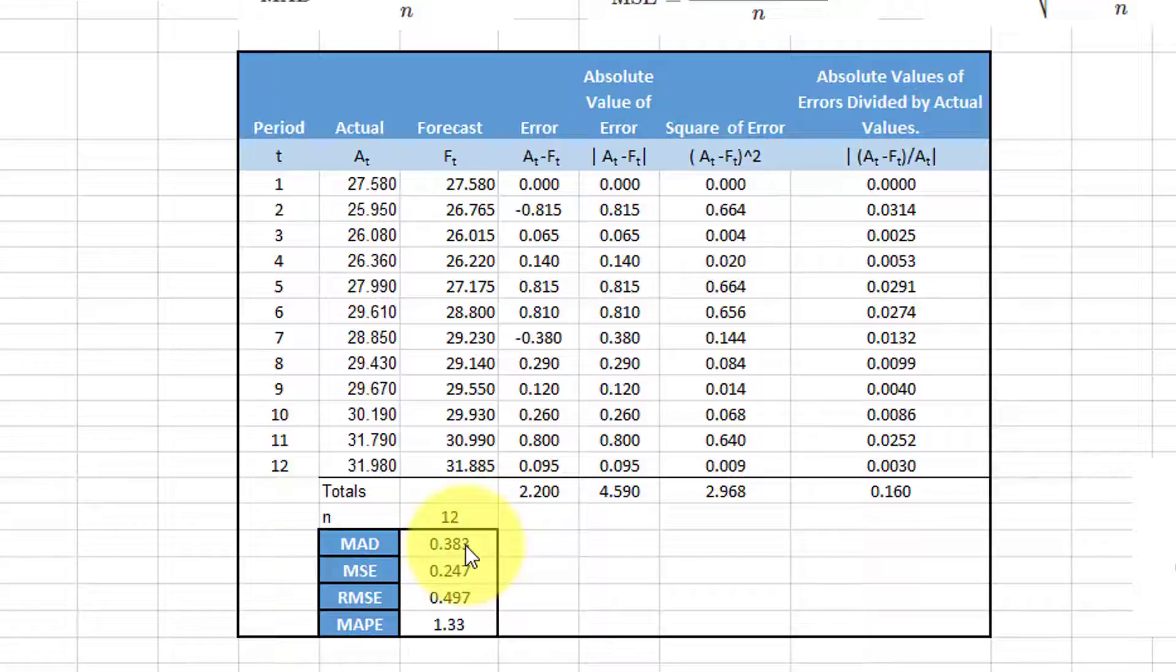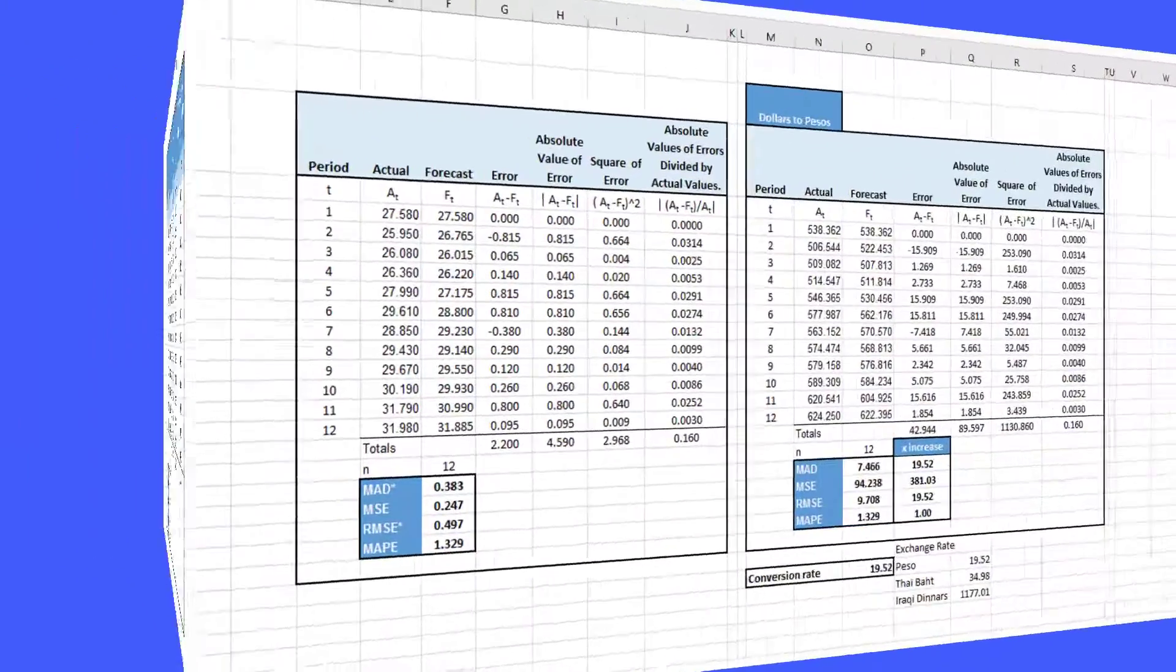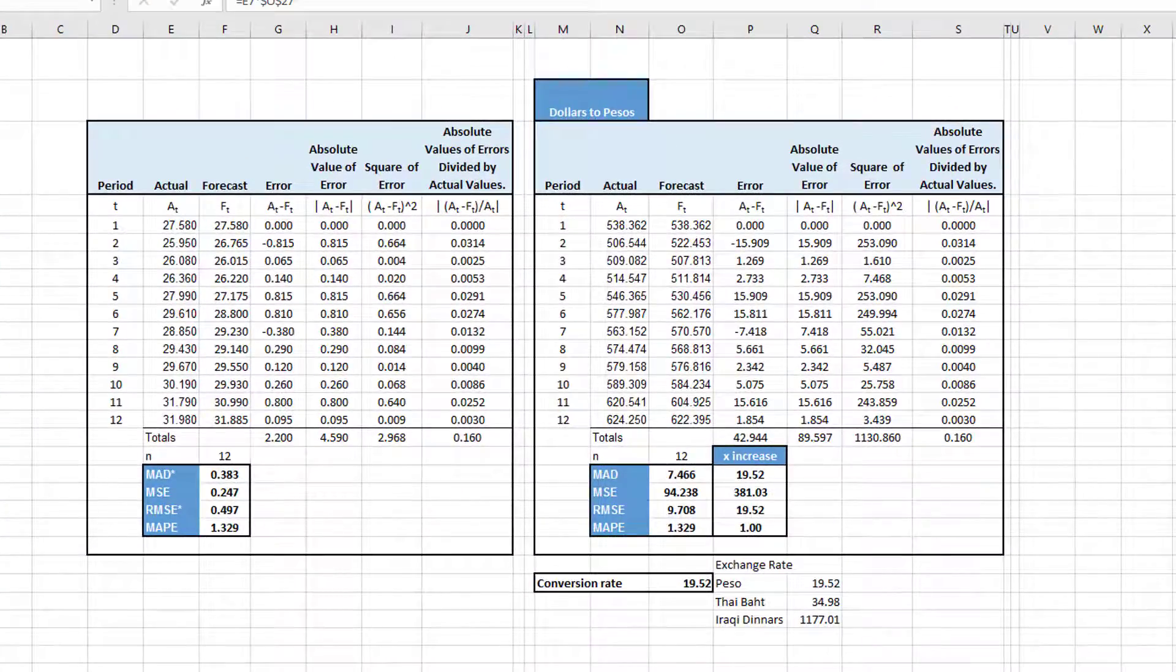Well, it turns out that each of the error metrics has its strengths and weaknesses. MAD and RMSE are both scale dependent. By that, I mean the size of the metric is related to the units of the forecast values. Let's take a look at an example.